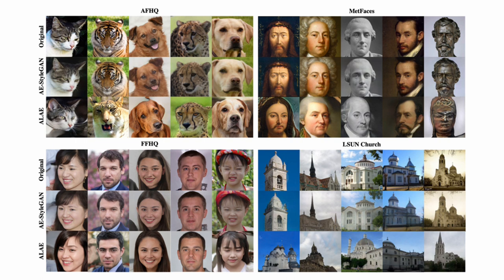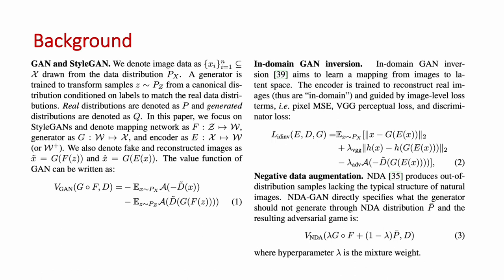Here are some reconstruction results on four datasets. Our model, AE StyleGAN, achieves much better reconstruction quality of real images compared with ALAE.